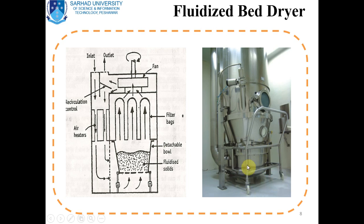The detachable bowl has wheels for movement. Hot pressurized air is passed through the perforated bottom, and the material is in the suspended form — that is termed the fluidized state of fluidized solids. You can also see in the diagram that filter bags are mounted above the detachable bowl for the recovery of fines. Further, you can see the fan and the exhaust outlet. This is the block diagram of the fluidized bed dryer.